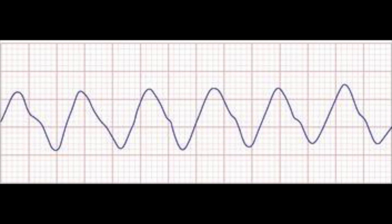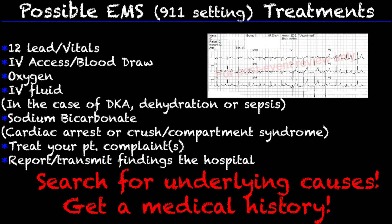This is what the sine wave looks like. Some possible EMS treatments for hyperkalemia in the 911 setting: obtain a 12-lead and vitals — a 12-lead is probably how we're going to identify potential hyperkalemia. We can gain IV access and get a blood draw. We can administer oxygen and IV fluids. IV fluid would be our treatment in the case of hyperkalemia due to DKA, dehydration, or sepsis — though this is patient dependent. If a patient is in DKA and also in renal failure as a dialysis patient, you probably don't want to overload them with fluids. Another treatment we have is sodium bicarb, in the case of cardiac arrest, crush syndrome, or compartment syndrome.